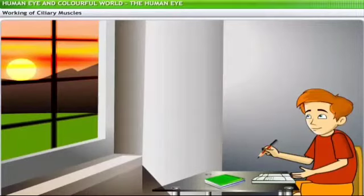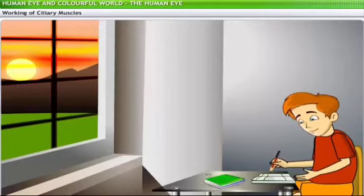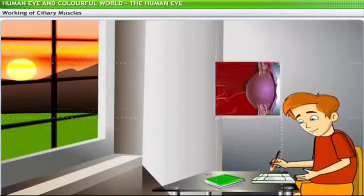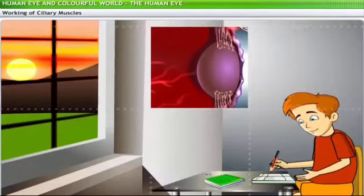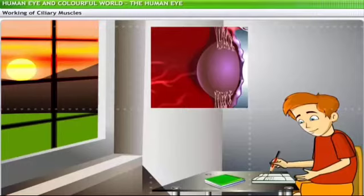Think about what happens when Jerry switches from looking at a sunset to solving his physics problems. Looking at the sunset, he sees a distant object; working on his notebook, he looks at something close to his eyes. His ciliary muscles will need to accommodate this change in distance — relaxing for the distant sunset and contracting for the nearby notebook.